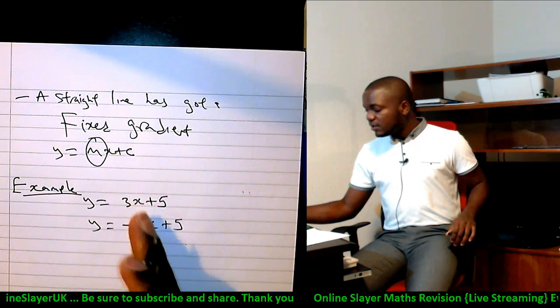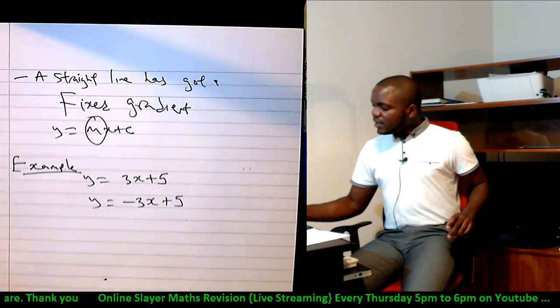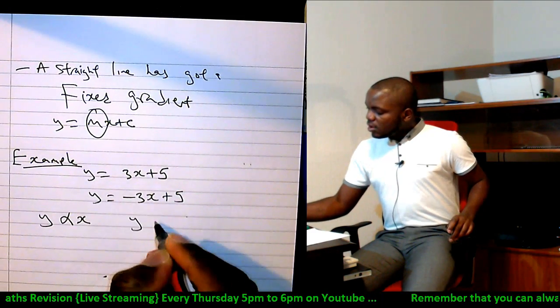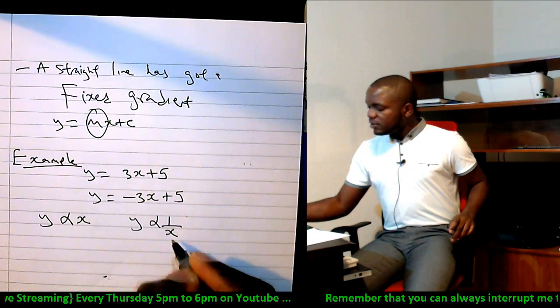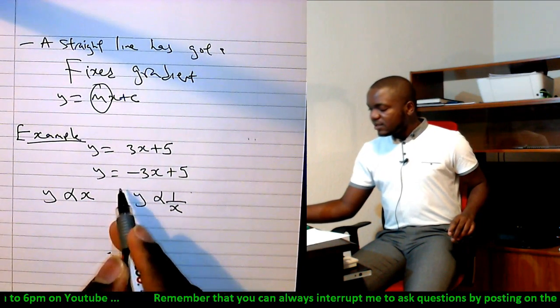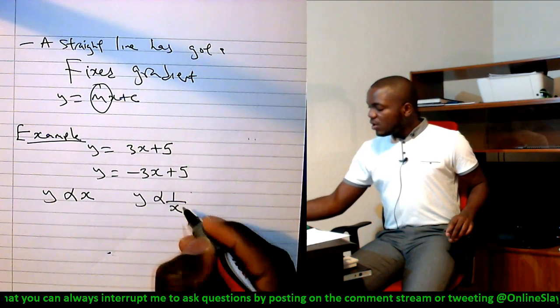What do you think the gradient tells us? It tells us if y is directly proportional to x or if y is inversely proportional to x. In other words, while x is increasing, what happens to y? Is y increasing as x increases, or is y decreasing while x is increasing?